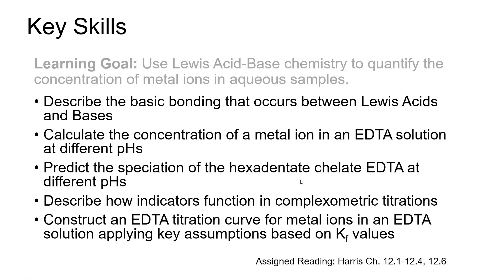In this module, we are going to discuss the chemistry of EDTA and how we use our existing equilibrium skill set — equilibrium formation constant values, predominance diagrams, and systematic treatment of equilibrium — to quantify the concentration of metal ions using EDTA titration. Specifically, we'll cover the nature of bonding between Lewis acids and bases, how to calculate metal ion concentration in EDTA solutions at different pHs, how to predict the speciation of hexadentate EDTA at different pHs, how indicators function in compleximetric titrations, and how to model EDTA titration curves applying key assumptions about KF values.